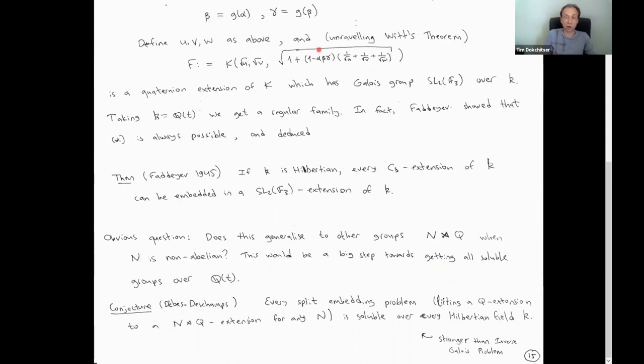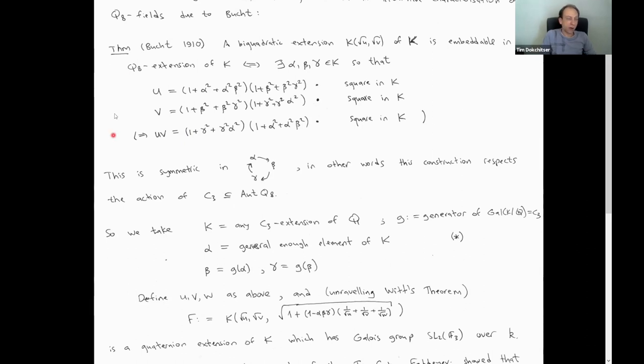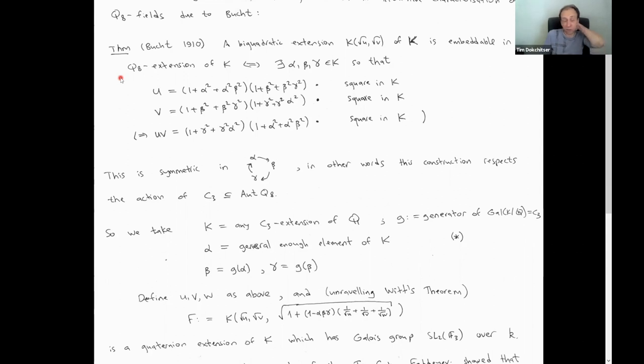There are some very interesting groups you could try to play with and see if you can generalize this construction. The key point here is that the quaternion group has an automorphism of order three, and we found a family of quaternion extensions respecting that automorphism action — which is what makes it possible to push further to SL2(F3) extensions. Normally when you construct a family for some group G it won't be invariant under its automorphisms, unless you try hard.